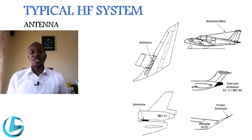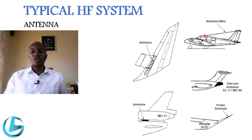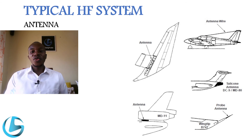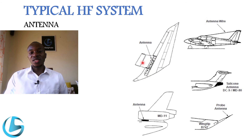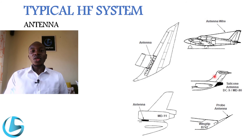The next component is the antenna. On old aircraft, the antenna used to be a long wire mounted on top of the fuselage up to the stabilizer. But with development and increases in aircraft speed and size, nowadays the HF antenna is mounted on the leading edge of the vertical stabilizer. As you can see in this diagram, this is the location of the HF antenna on modern aircraft — for example, on the A320, the antenna is mounted in this position. On some other aircraft, the antenna is mounted at the tail of the aircraft.